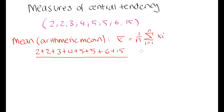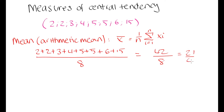The sum of our data set is denoted here, and we divide by the number of values n, which is 8. Adding everything together gives us 42, divided by 8, which simplifies to 21/4, or 5.25. So the arithmetic mean of this data set is 5.25, which makes sense — that is generally where a lot of these numbers are clustering.